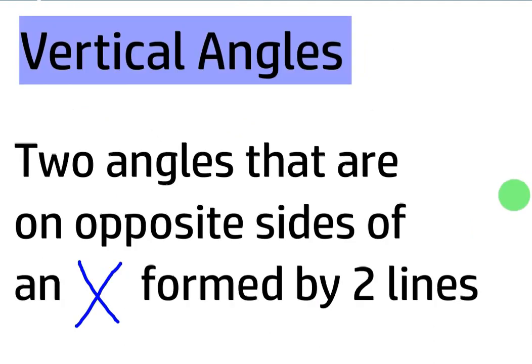Next, we have vertical angles. Vertical angles are two angles that are on opposite sides of an X formed by two lines. So for example, an angle up here and an angle down here would be vertical angles, or this angle and this angle would be vertical. They're on the opposite sides of the X.